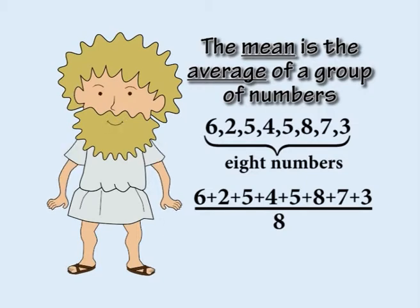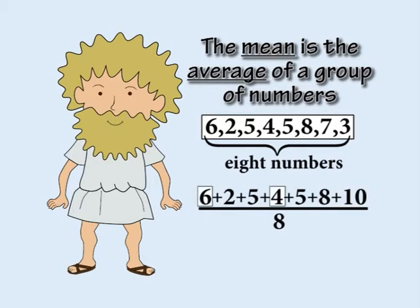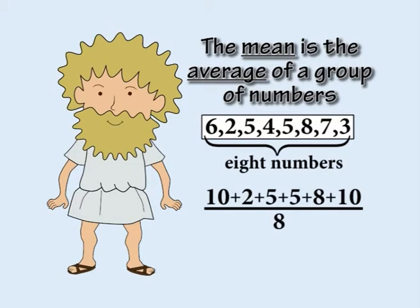For example, what is the mean of these numbers? First, let's add them up in tens. Seven plus three is ten. Six plus four is ten. Eight plus two is ten. And five plus five is ten.